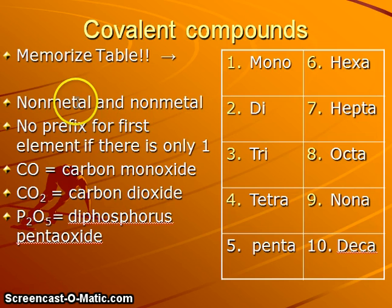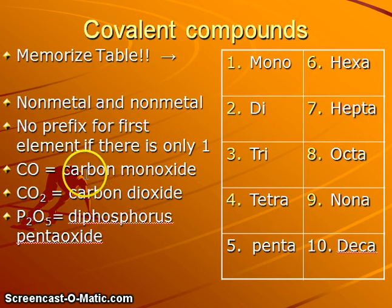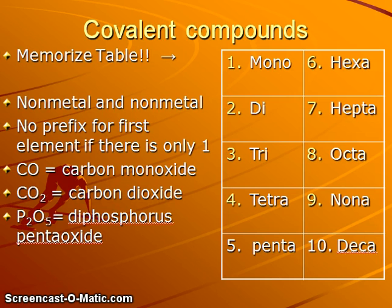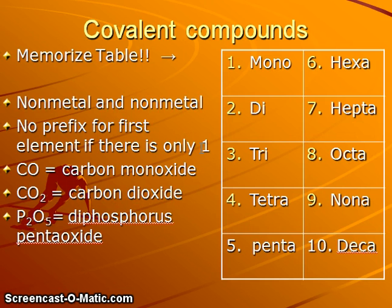Covalent compounds consist of non-metallic elements bonded with non-metallic elements. We're also going to determine that the electronegativity difference between the two elements is going to be less than two Pauling units. We will not use a prefix for the first element if there's only one of those. For all secondary elements we will need to use a prefix to indicate the number. It sounds silly to say monocarbon monoxide or monocarbon dioxide, and we would never use mono as a prefix for the first element in a covalent binary compound.